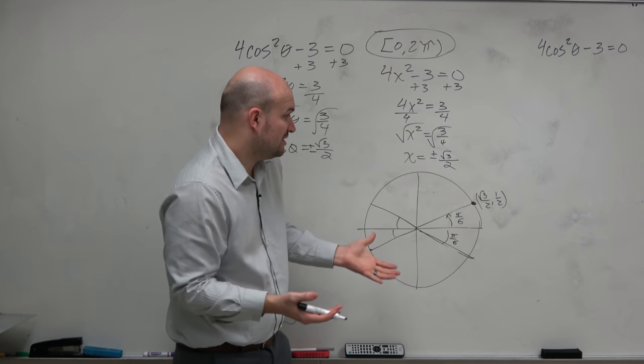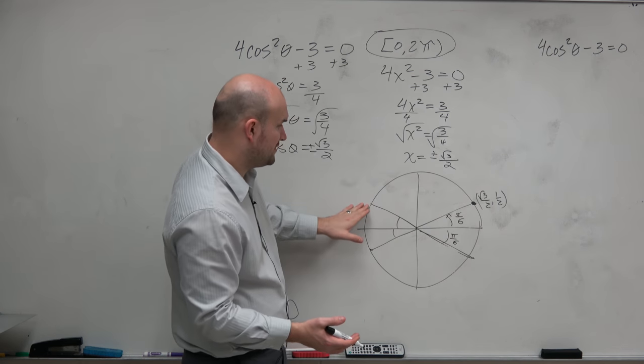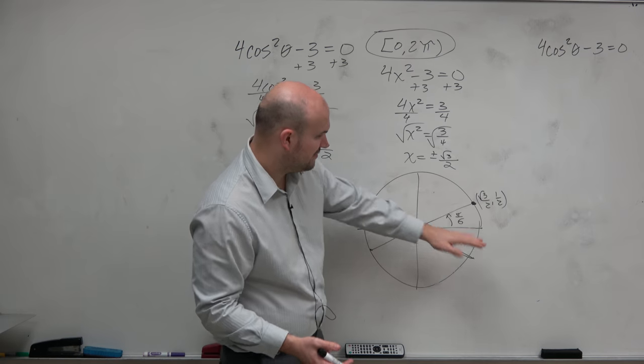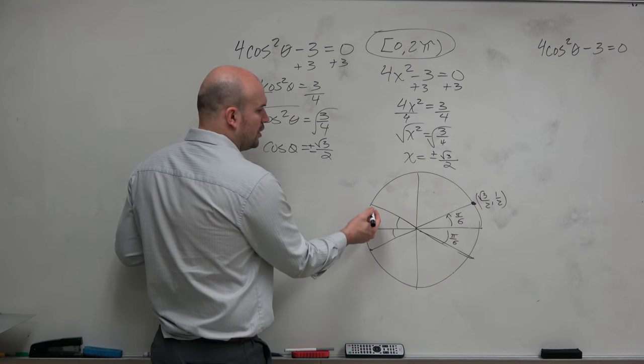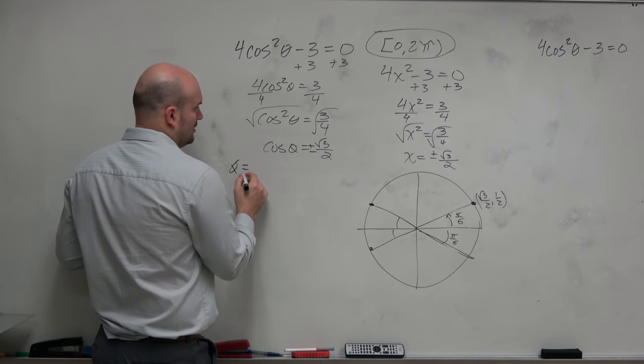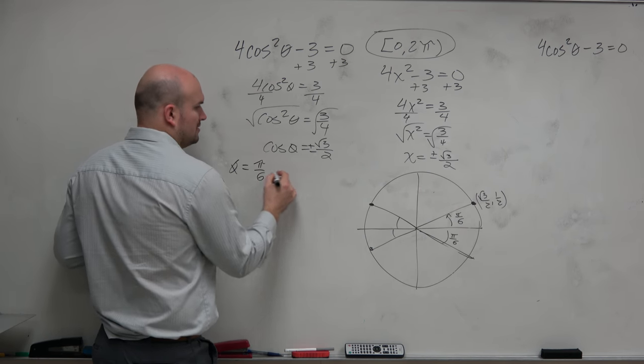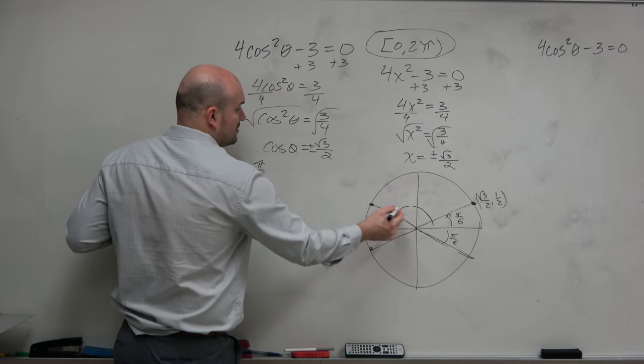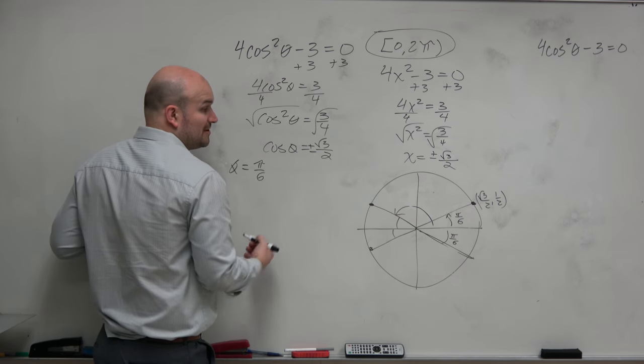Because basically what these angles are is just reflecting over here, reflecting down, and reflecting down. So I'm not going to draw in all of these points. But you guys could say theta equals, we know π over 6. Does anybody know what this angle is? 5π over 6, right? Because halfway around the circle is π, or 6π over 6. Subtract π over 6, you're at 5π over 6.